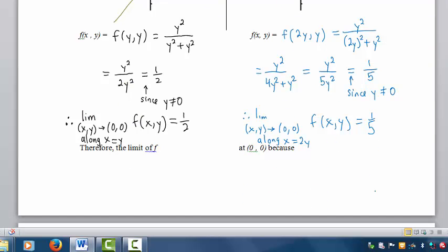So the general limit does not exist at (0, 0) because the two path limits are not equal.